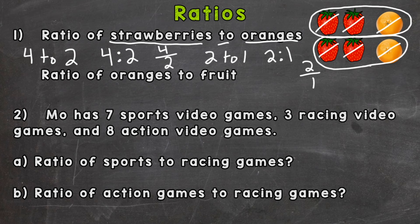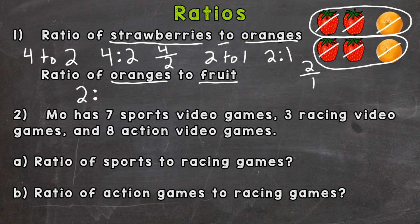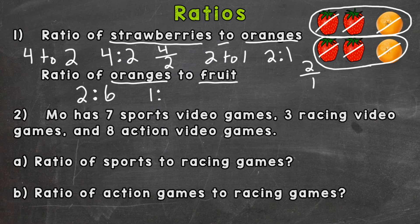Let's take a look at the second part of number one: the ratio of oranges to the total amount of fruit. This is called a part-to-whole ratio because we're taking a part of the group — the oranges — compared to the whole group of fruit. We have two oranges to six total pieces of fruit. This simplifies by dividing both by two: one orange to every three pieces of fruit.